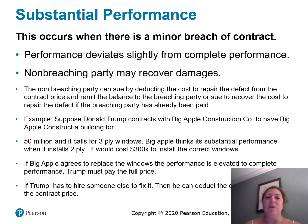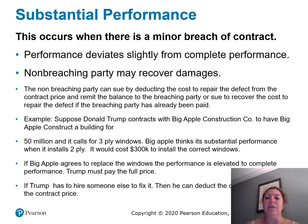For example, suppose Donald Trump contracts with Big Apple Construction to build a building for $50 million, calling for 3-ply windows. Big Apple thinks it's substantial performance when it installs 2-ply windows. It would cost $300,000 to install the correct windows. If Big Apple agrees to replace the windows, the performance is elevated to complete performance and Trump must pay the full price. If Trump has to hire someone else to fix it, he can deduct the cost of the repair from the contract price.